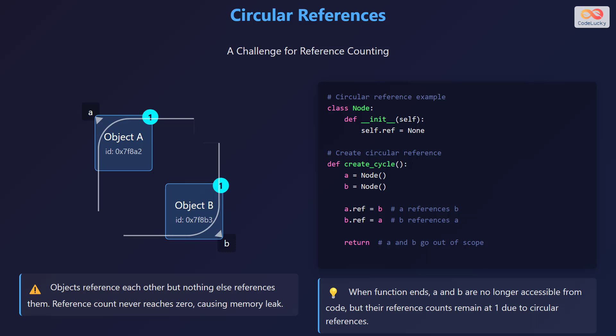Reference counting has a limitation when it comes to circular references. Consider a scenario where two objects reference each other, creating a cycle. Even if these objects are no longer accessible from the rest of your code, their reference counts remain at 1 or higher due to the mutual referencing, which prevents them from being automatically freed, leading to memory leaks.